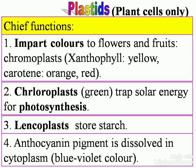Chief functions of plastids: they impart colors to flowers and fruits — those are known as chromoplasts. Xanthophyll is yellow and carotene is orange or red. Chloroplasts, which are green, trap solar energy for photosynthesis. Leucoplasts store starch. Anthocyanin pigment, dissolved in cytoplasm, is of blue-violet color. So these are the functions of chromoplasts, chloroplasts, and leucoplasts, involving xanthophyll, carotene, and other pigments.